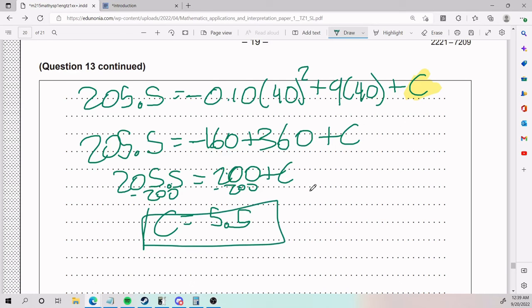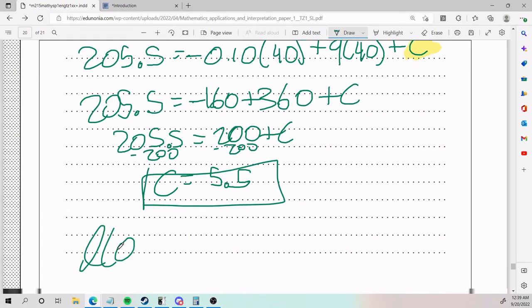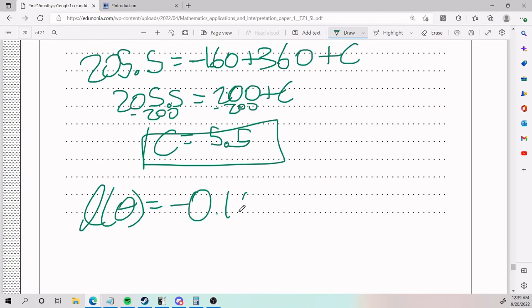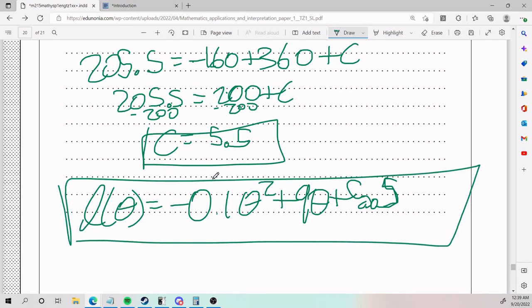All right, so C is 5.5. That means that my original function is negative 0.1θ squared plus 9θ plus the C that I put earlier, 5.5. So again, we have to do this in order to get the C and fill in our function as it is.